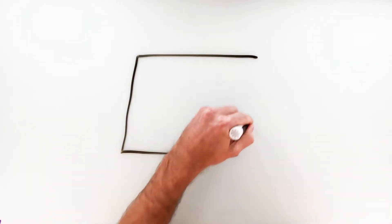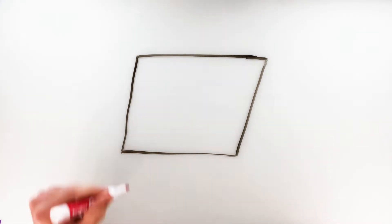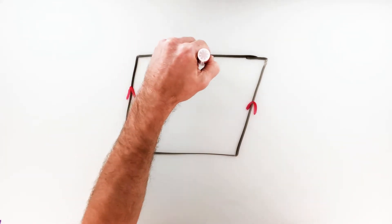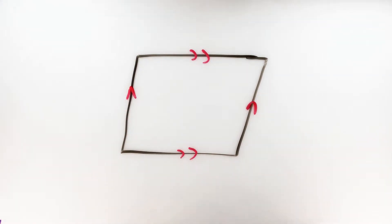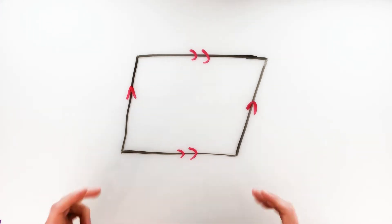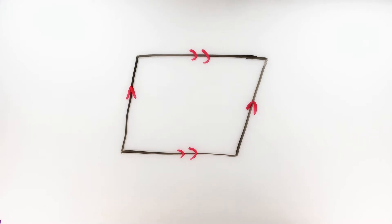We said that a parallelogram by definition is a quadrilateral with both pairs of opposite sides parallel to each other. We denote parallel sides with these little red arrows here. So the definition of a parallelogram: a quadrilateral with both pairs of opposite sides parallel. We can use the fact that these sides are parallel to each other to develop a few other properties. Some of these properties might seem kind of obvious, but we'll go ahead and run through why these properties hold true with a little bit of proof.